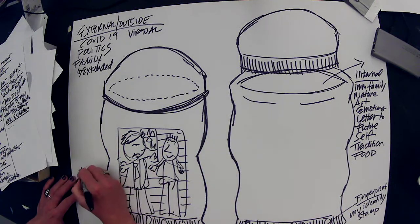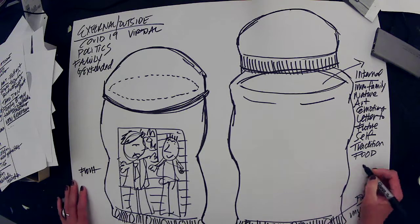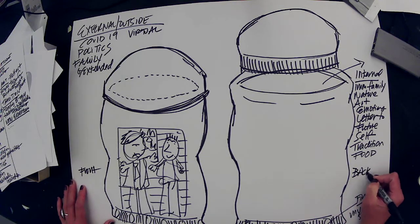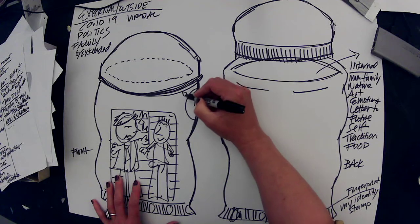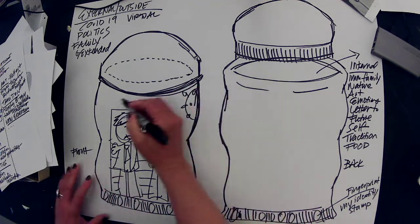You might even want to do some more drawings, like maybe this is the front and this is the back. So we turn it around and then maybe we have little COVID spikes everywhere.